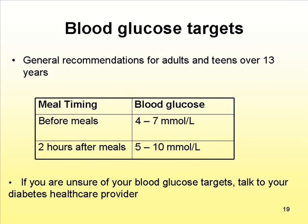Let's move on to your blood glucose targets. The general recommendations for adults and teens over 13 years: before meals, blood sugar should be between 4 and 7, and two hours after meals, your sugar should be between 5 and 10. If you're wondering how food is affecting your blood glucose, just check your sugars two hours after eating that meal and see if it's within target, between 5 and 10, or discuss with your diabetes health care provider.